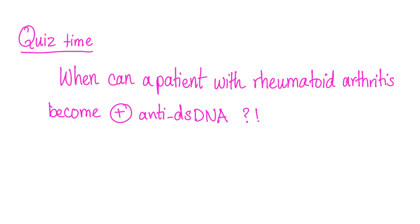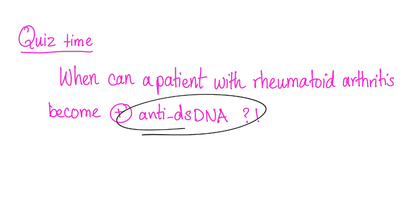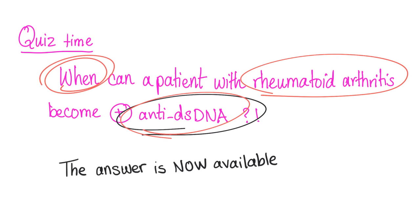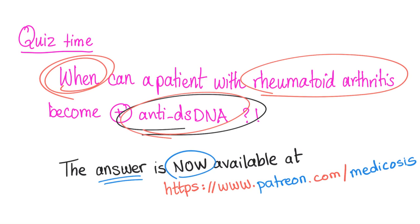Quiz time: when can a patient with rheumatoid arthritis become positive for anti-double-stranded DNA? This patient only has rheumatoid arthritis — they did not get lupus — but they developed anti-double-stranded DNA antibodies. Is that possible, and when can this happen? Let me know down in the comment section.